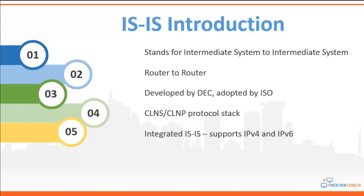Integrated IS-IS has native support for both IPv4 and IPv6 within the same stack, unlike OSPF. OSPF version 2 only supports IPv4. If you want to support IPv6, you'd have to use a totally new protocol — OSPF version 3 — whereas with IS-IS, different TLVs give you that support natively.